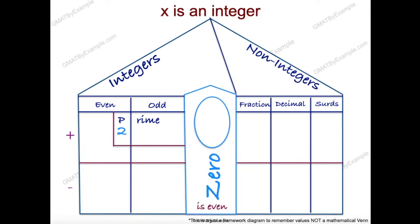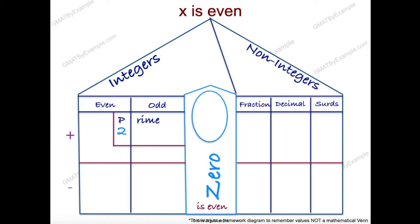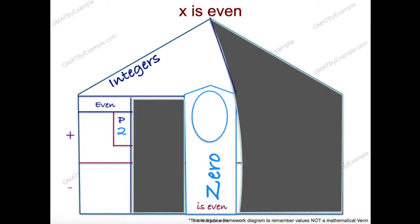If x is given to be an integer, we know it's not a non-integer, so we block out the whole right side. However, nothing else is given, so we have to consider everything: x is even, x is odd, prime or not, positive and negative values, and also zero — do not forget zero. If x is given to be even, then since even automatically means it's an integer, we block out the right-hand side. Since it's not odd, we block out the odd column. But we must consider x being positive even, negative even, and zero, which is also even.